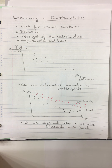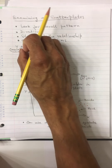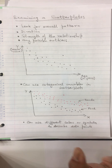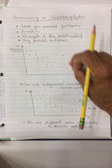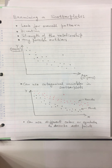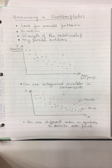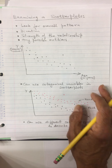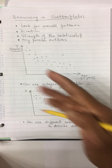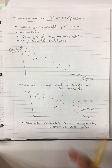Just like earlier in the semester when we looked at histograms and box plots for outliers, we do the same here. For example, with resale values, if one data point stands out from the rest — say a car with very low mileage, barely used, in tip-top condition — that would be an outlier compared to the rest of the data.